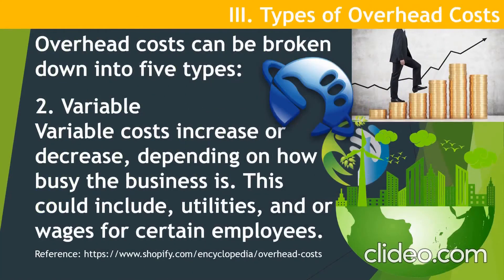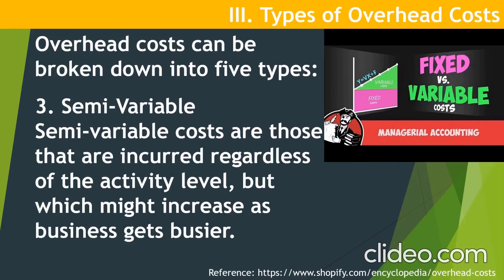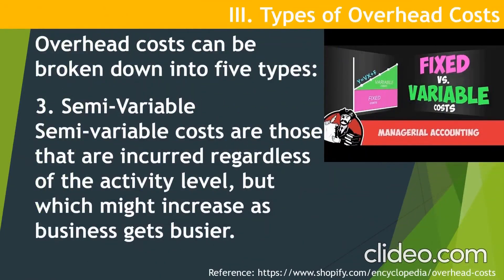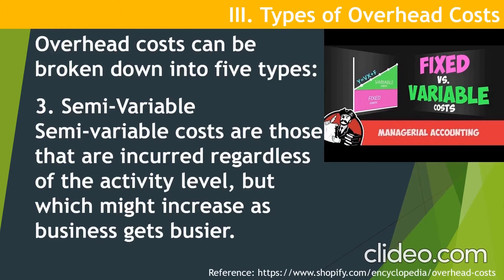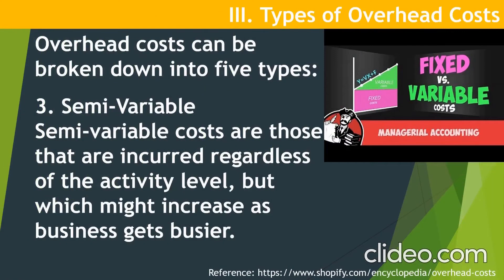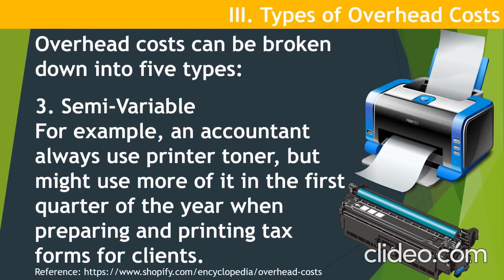Variable costs are especially relevant when employees provide overtime just to increase production. Number three, semi-variable costs are those that are incurred regardless of the activity level, but which might increase as the business gets busier. There is no fixed increase or decrease — it is semi-variable. For example, an accountant always uses printer toner, but might use more of it in the first quarter of the year when preparing and printing tax forms for clients.